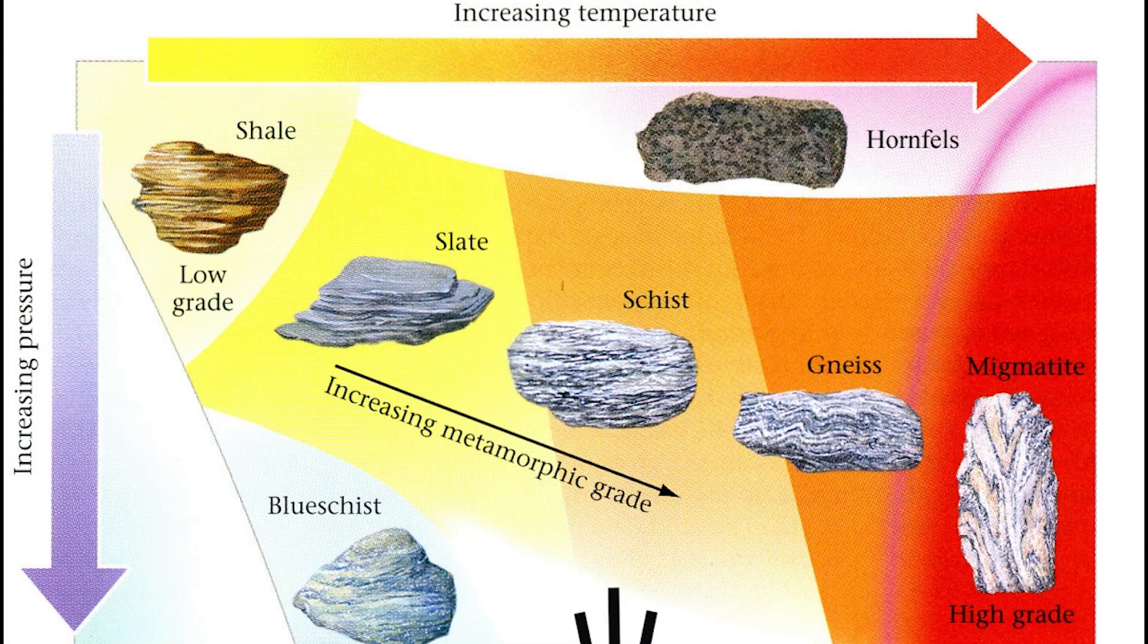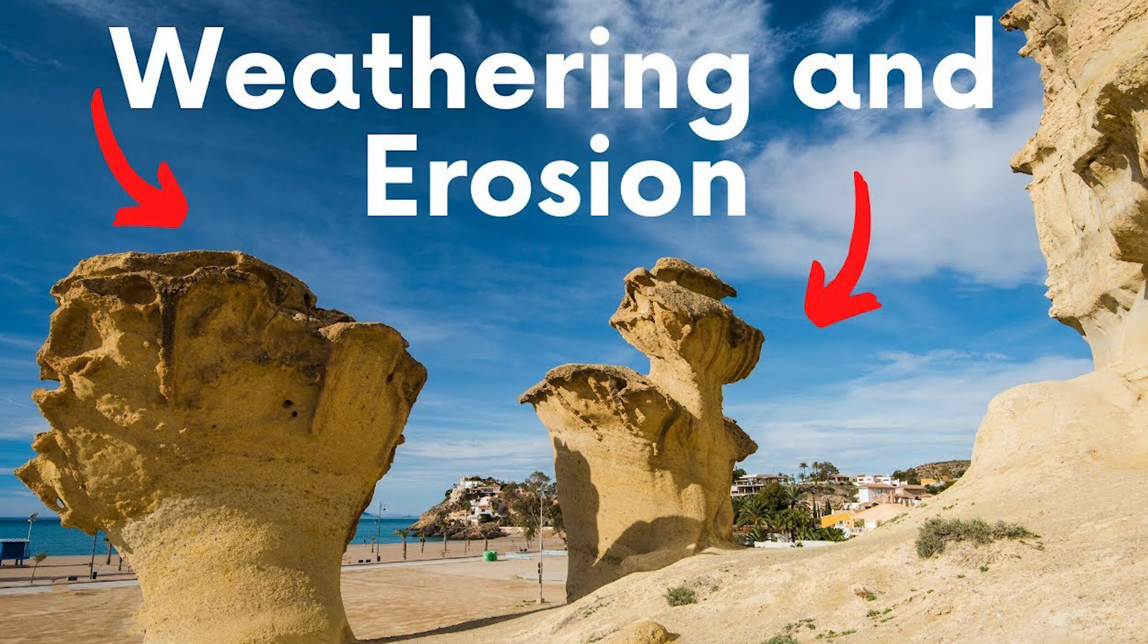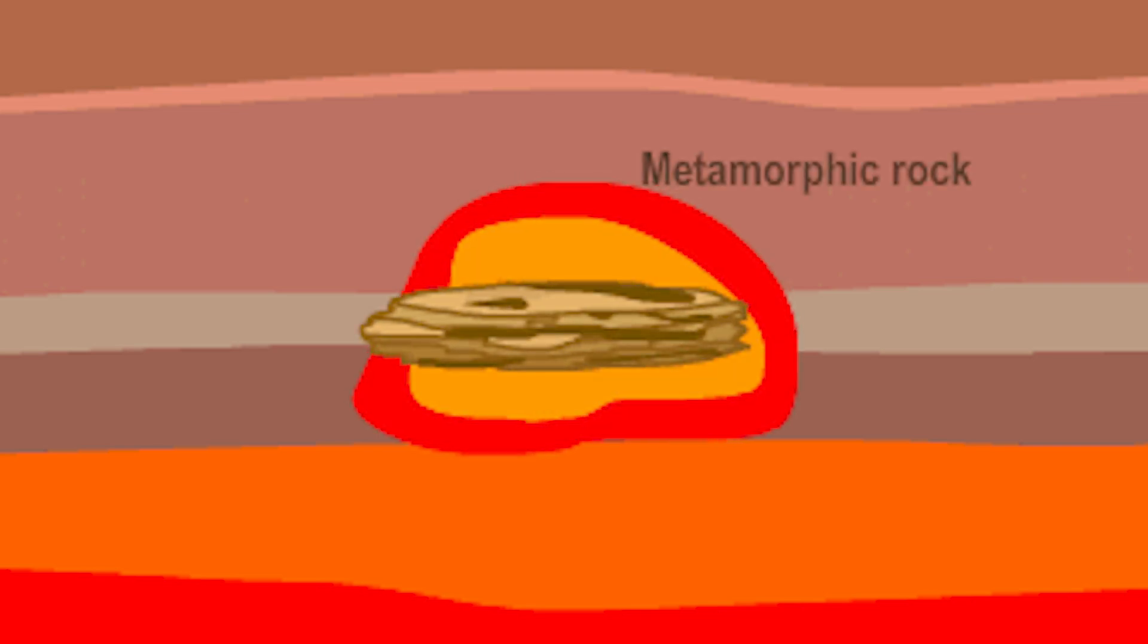This rock cycle is driven by two main forces: heat and pressure from within the earth, and weathering and erosion at the surface. Together, these forces keep rocks in a state of continual transformation. But let's break it down step by step.